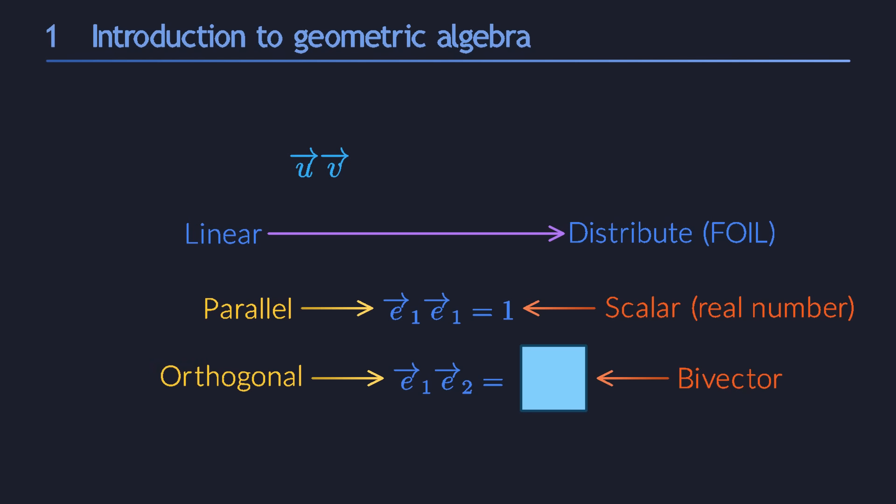The geometric concepts of being parallel and being orthogonal are dual to each other, and we will be able to express this duality in very precise terms. When our two vectors are not parallel and also not orthogonal, but a mix of both, their product will naturally be a mix of scalars and bivectors.